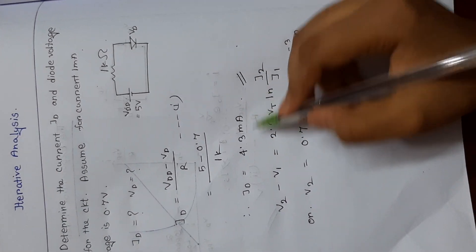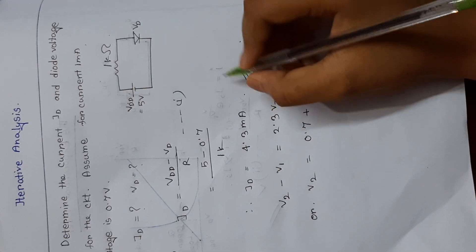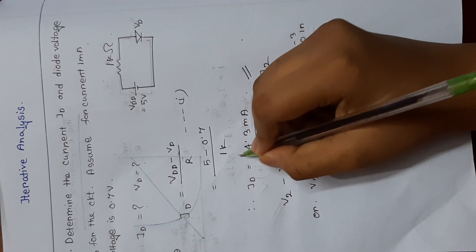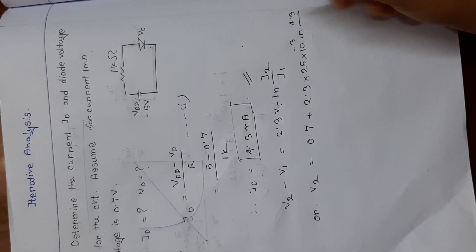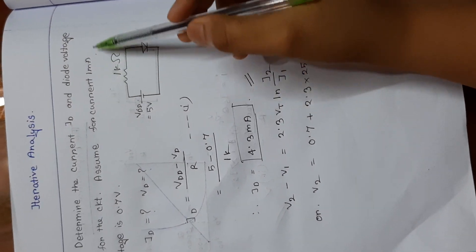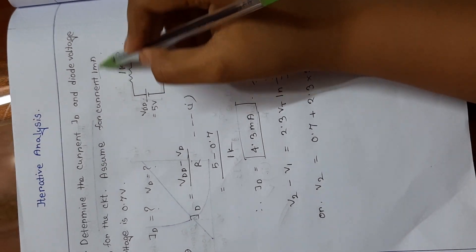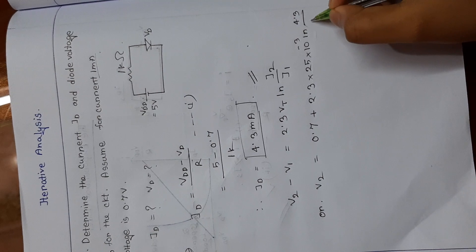And ln, we have to take I2, we have to consider this 4.3 milliampere as the I2, that is we have to take 4.3 milliampere. And in this question I have written that this is 1 milliampere.